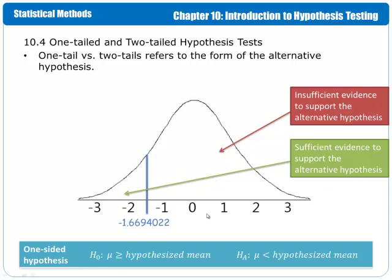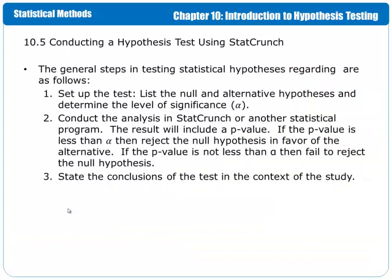So the null hypothesis says the mean is up here. If our sample mean is way down here, then our sample data do not support the null hypothesis. So here are the general steps for conducting a hypothesis test using StatCrunch. First we want to set up the test. We list the null and alternative hypotheses and determine the level of significance, alpha.